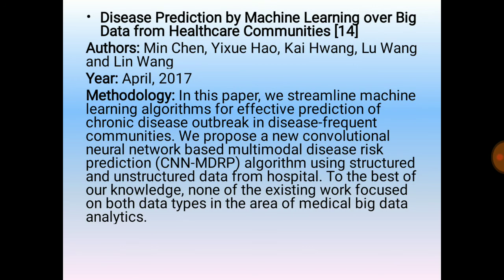The fourth literature survey paper is "Disease Prediction by Machine Learning over Big Data from Healthcare Communities," published in April 2017. In this paper, machine learning algorithms are streamlined for effective prediction of chronic disease outbreaks in disease-frequent communities.